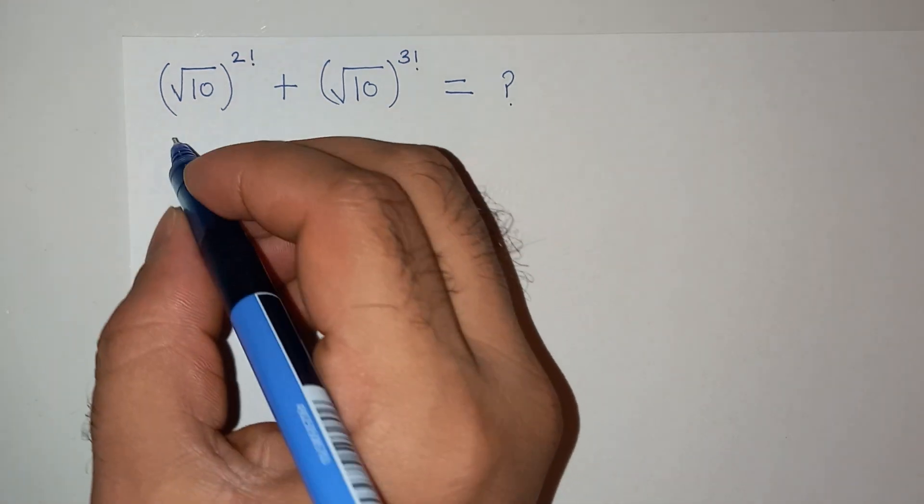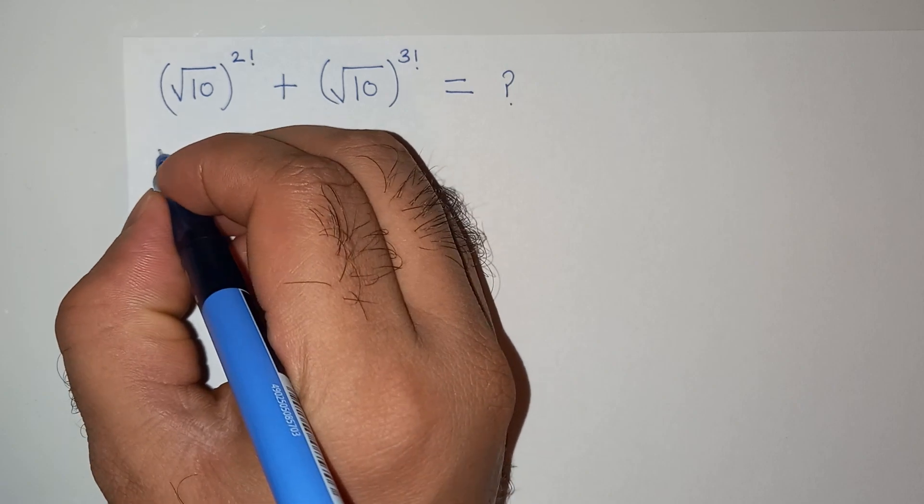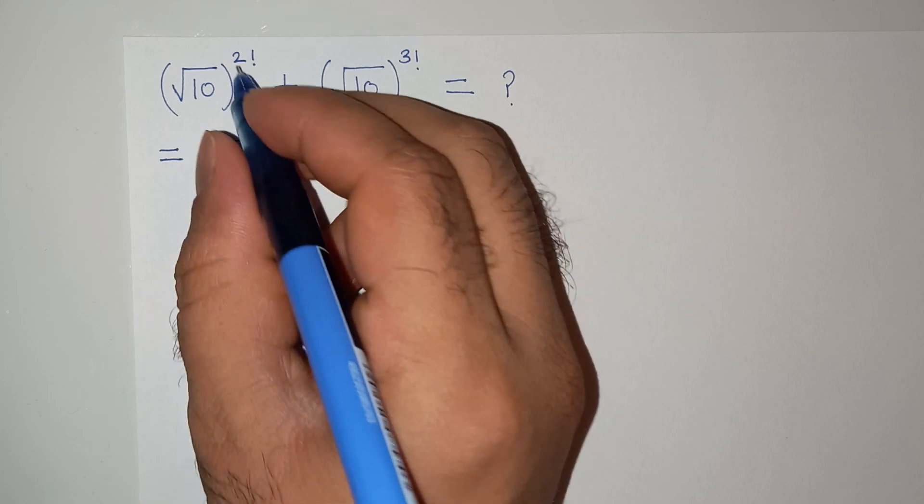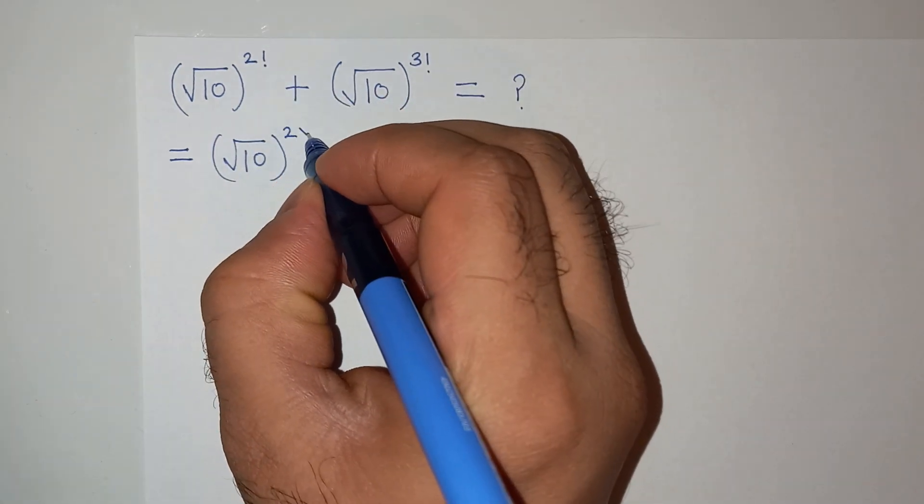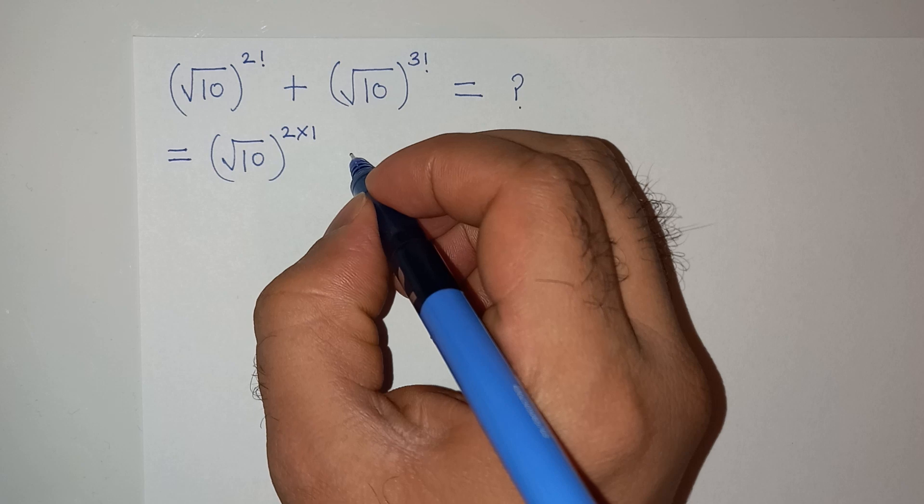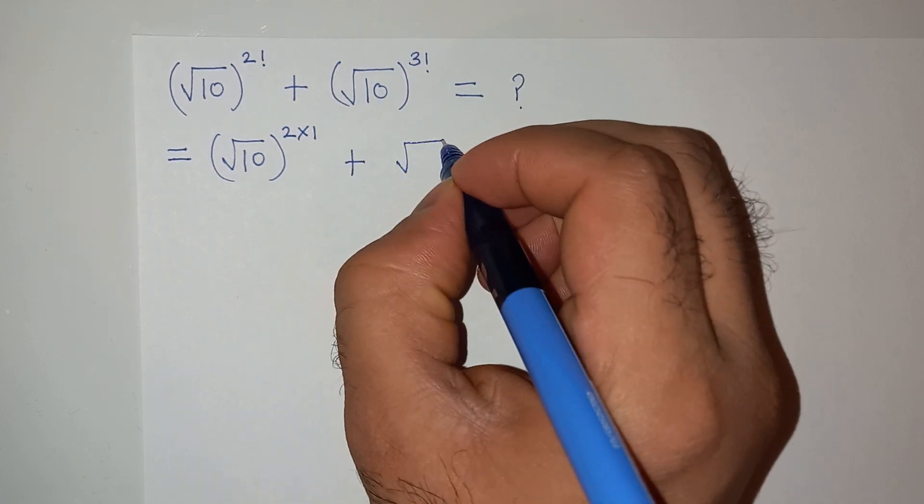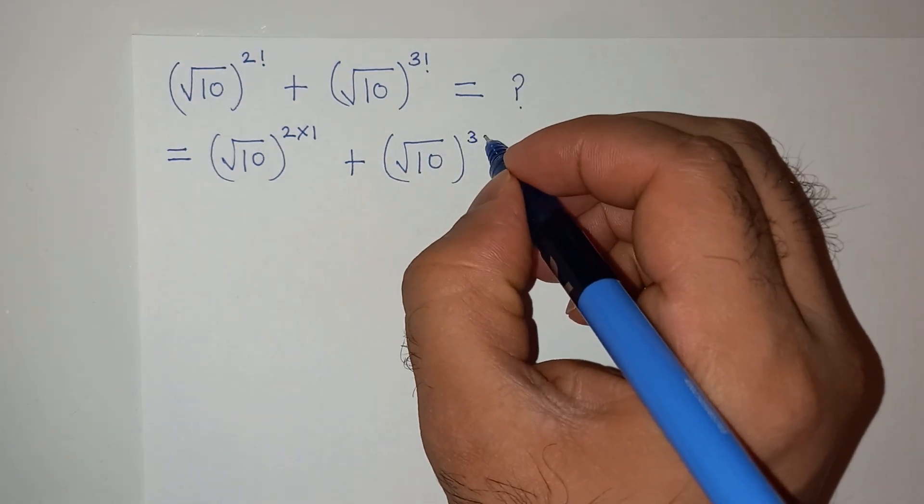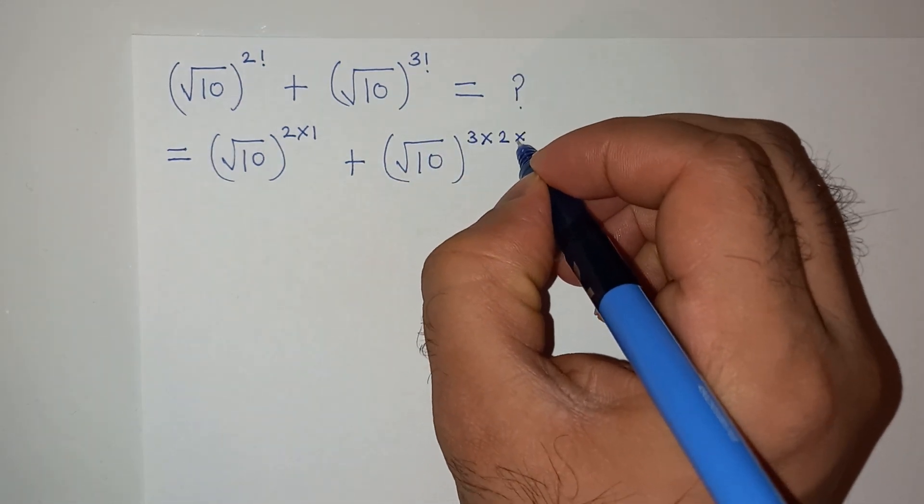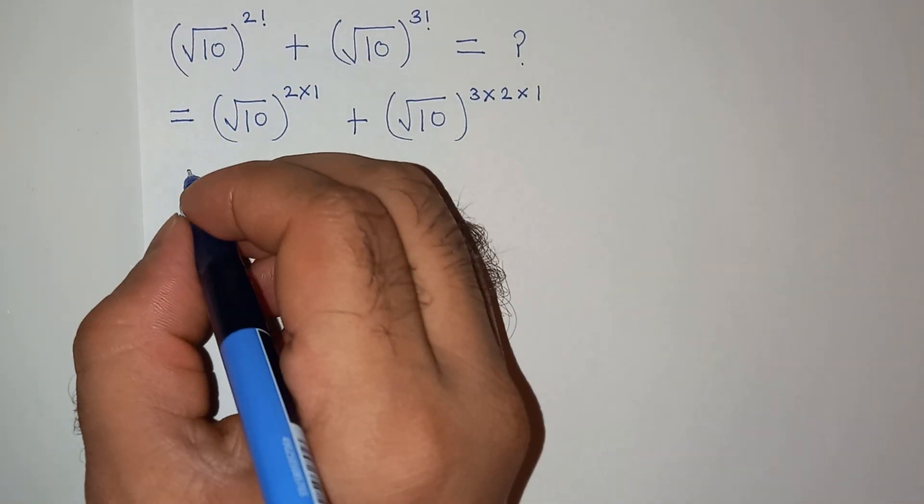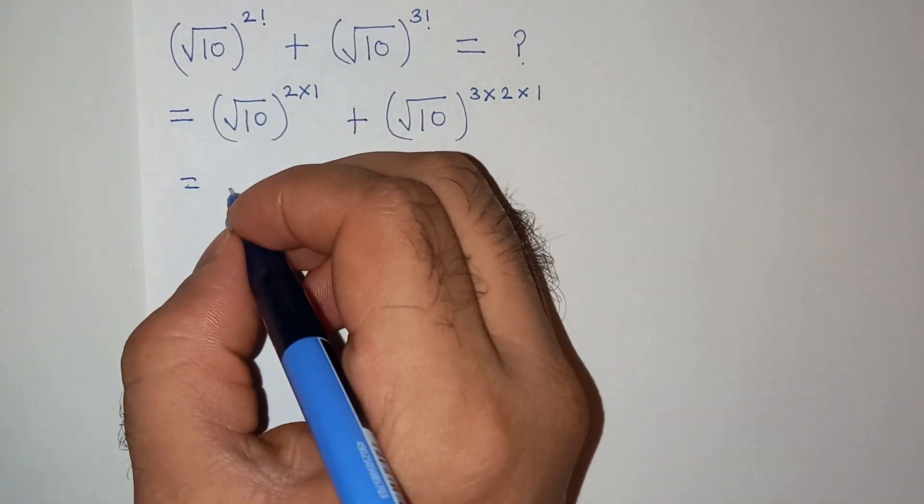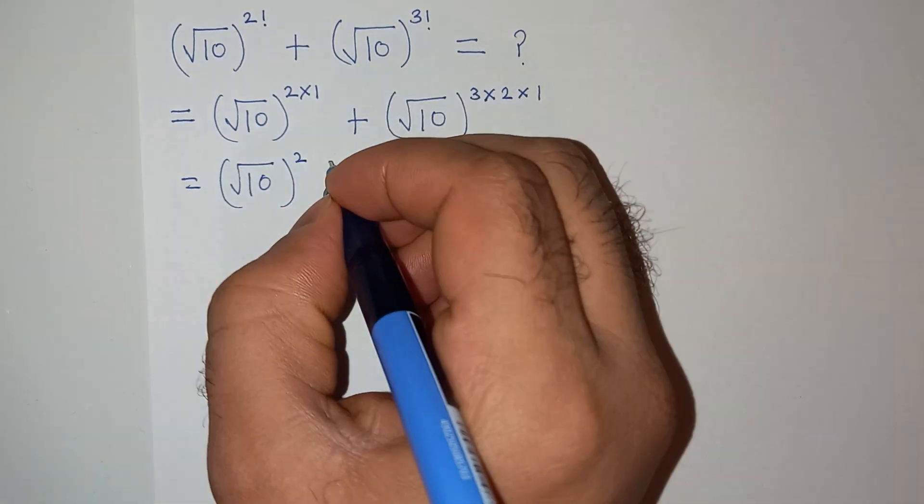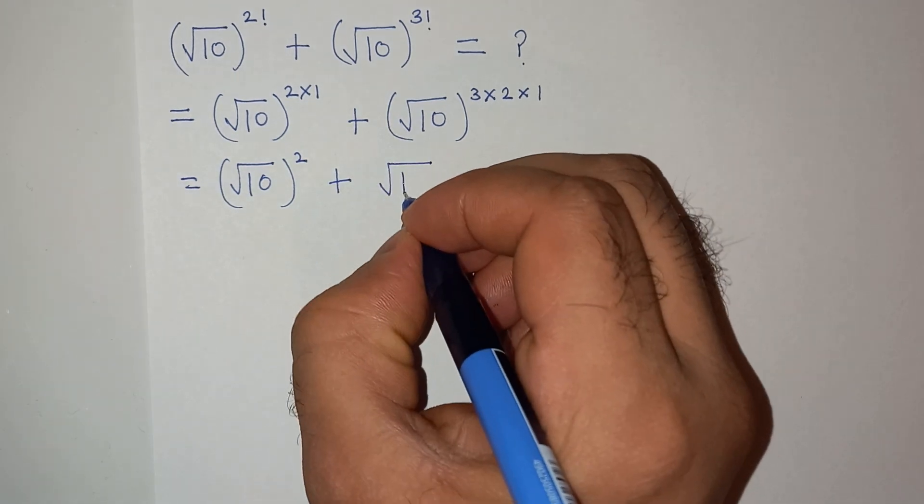All right, we can write the above equation as square root of 10, and 2 factorial can be written as 2 multiplied by 1, plus square root of 10. 3 factorial can be written as 3 multiplied by 2 multiplied by 1.